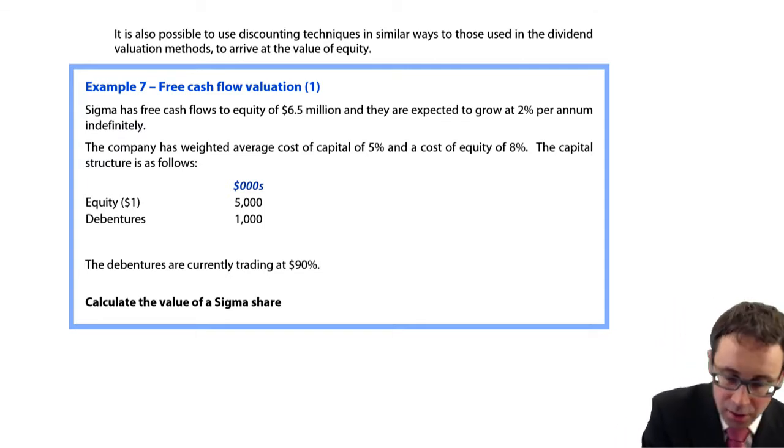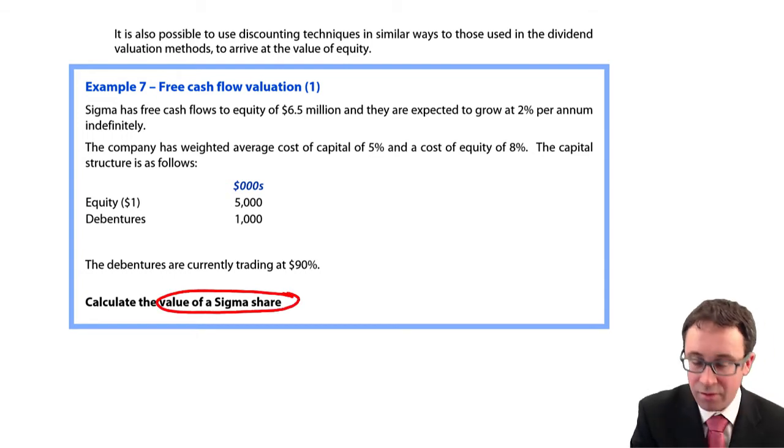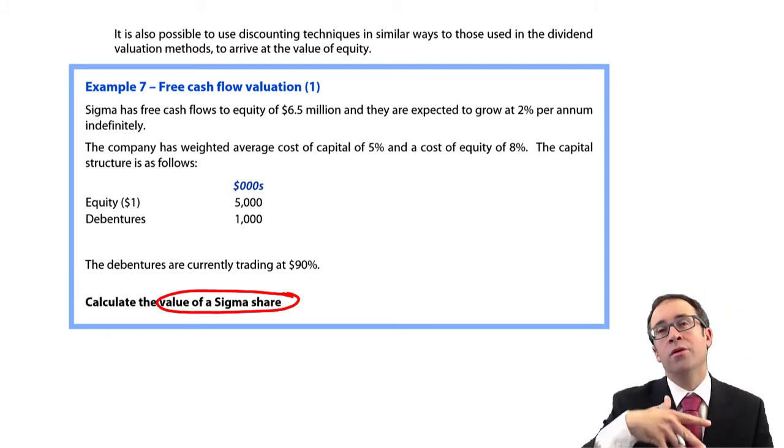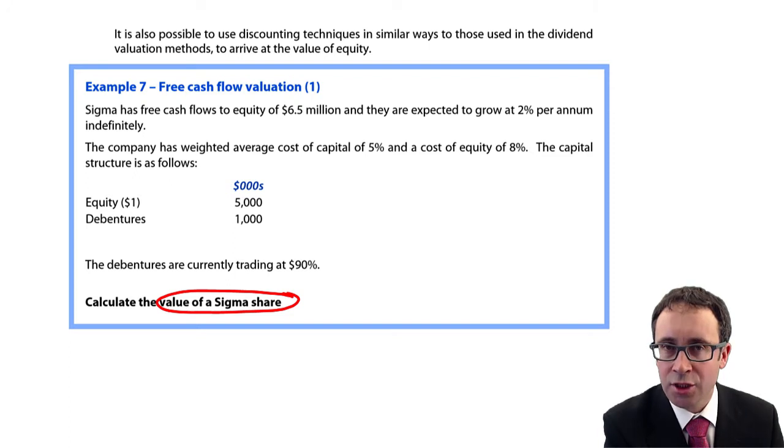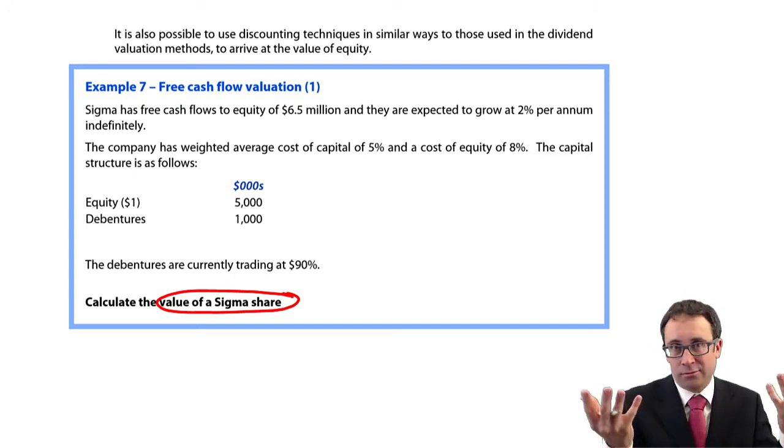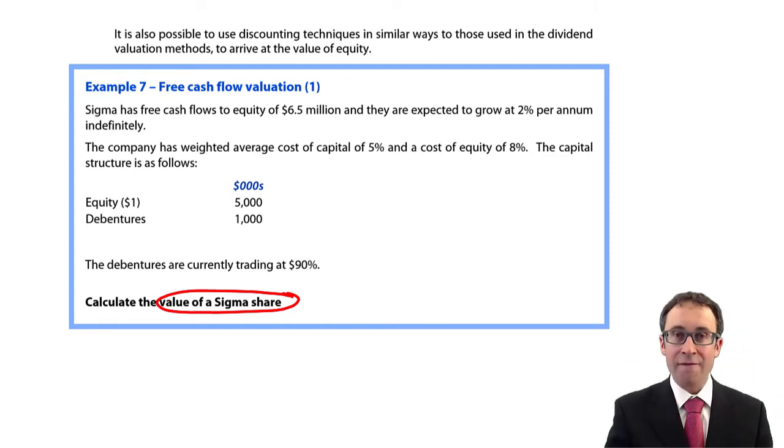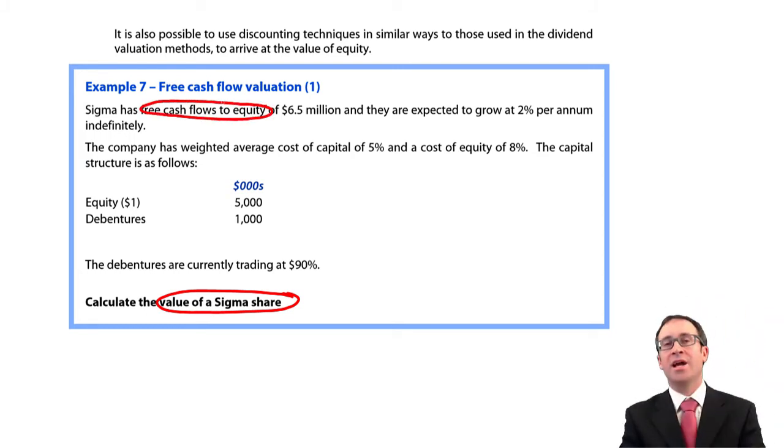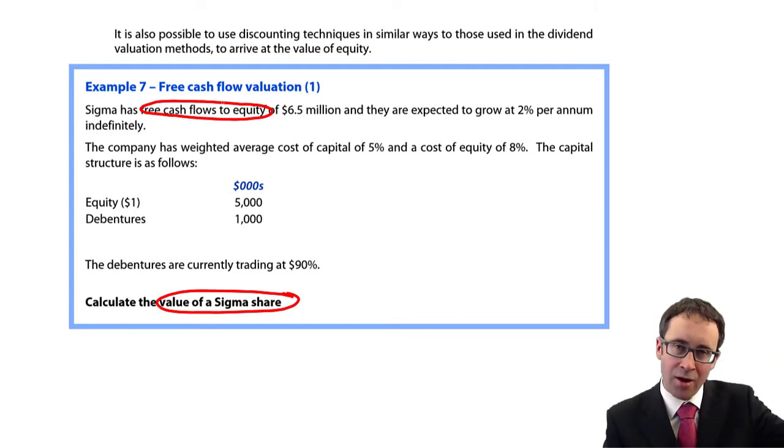It wants us to work out the value of a Sigma share. Be careful there. It's not saying work out the value of equity, it's working out the value of a share. So to work out the value of the share, you need the value of equity in total, but then we'll need to divide it by the number of shares in issue. Sigma has free cash flow to equity. That's the figure you're given - not free cash flows, but free cash flow to equity. The cash flows that are attributable to the shareholders only, after the deduction of any interest. The debt holders have got their cash. What's left for the equity shareholders? Here we're told that we have 6.5 million.